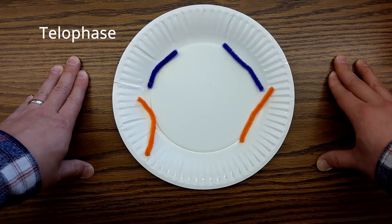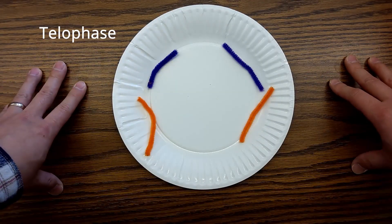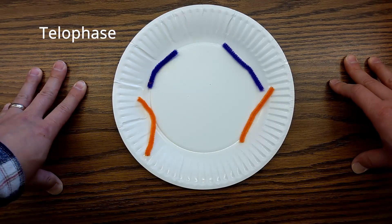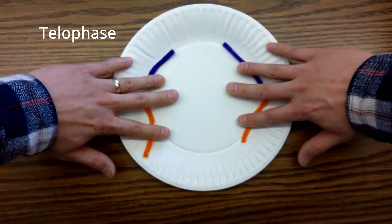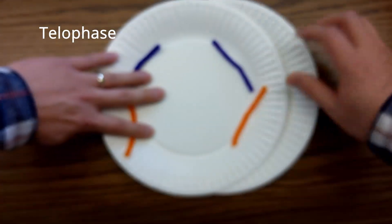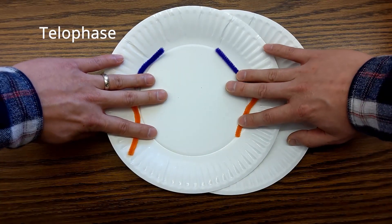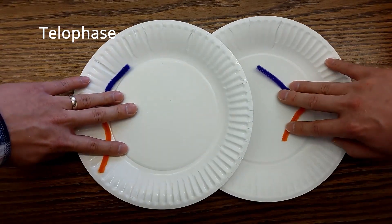Then there's telophase. We start to see two nuclei form and each nucleus contains a complete copy of the cell's DNA. Continuing from anaphase here, we will start to see a new cell begin to form.